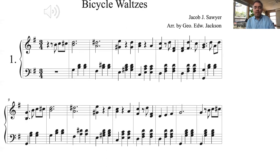So let's listen to a piece of music. This is the beginning of the first Bicycle Walls by Jacob Sawyer, a 19th century composer who was born in 1856 and died in 1885. This piece was composed in 1885. It was the last piece that Sawyer composed before his untimely death from tuberculosis, and before it was published, it was arranged by the composer Jackson. So here it is.